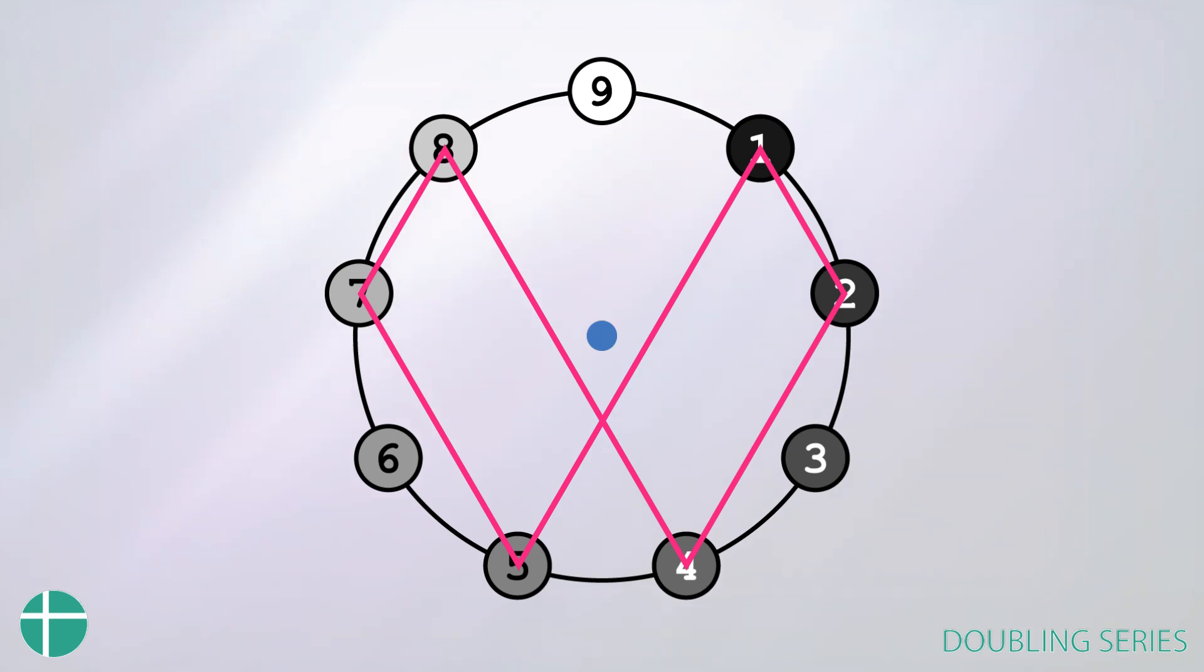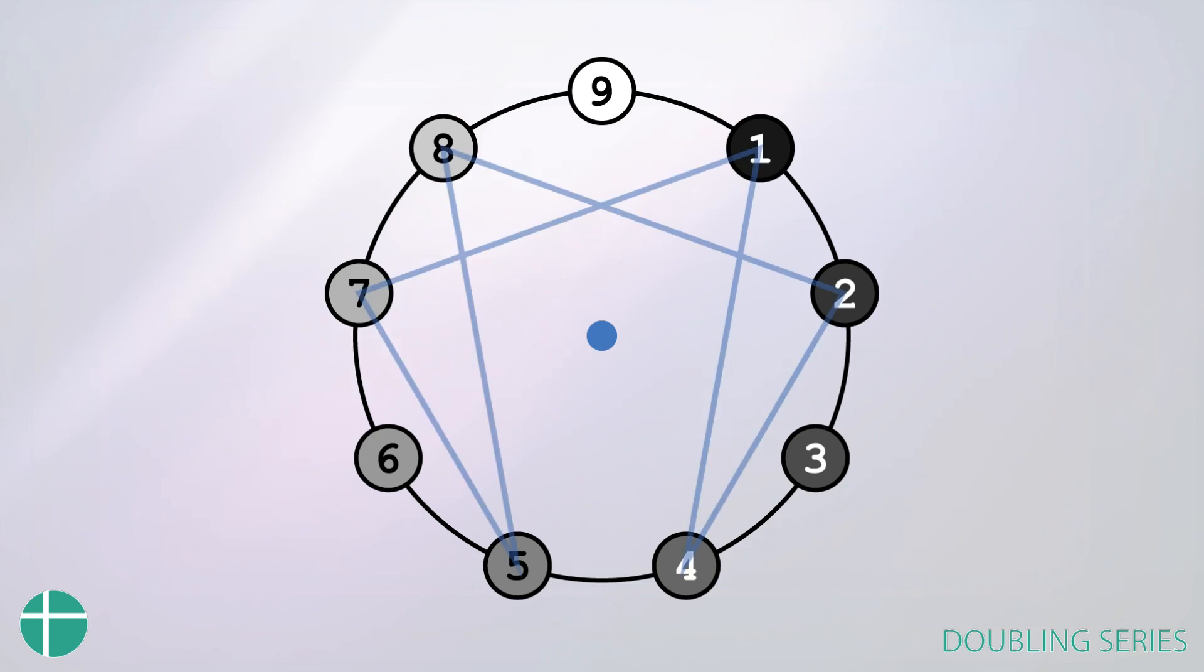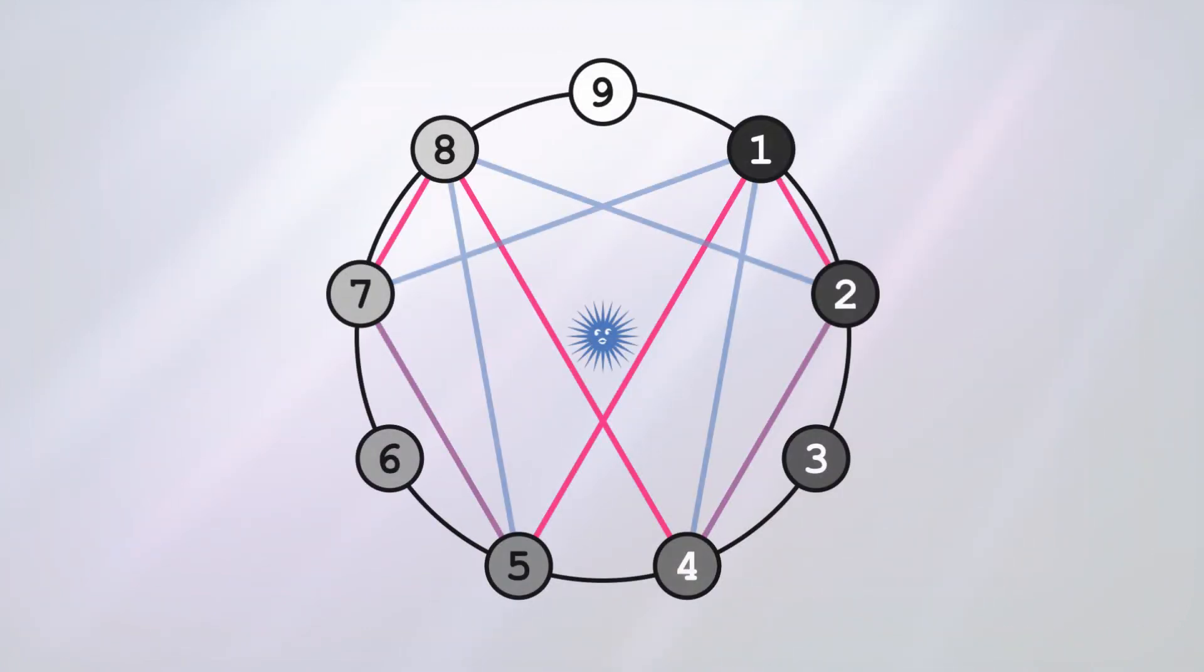When you divide 1 by 7, it gives us this other pattern of 1, 4, 2, 8, 5, 7. And when you graph this pattern on the circle, you get a graph that looks something like this. And when you overlap these two patterns, this is what the result is. We'll be going over these in more detail in future videos, but for now, just kind of keep them in your mind.